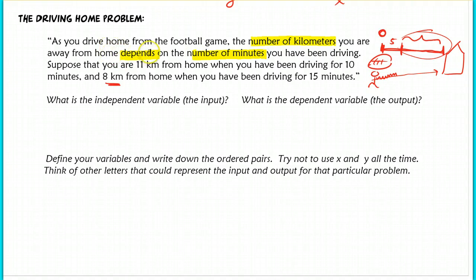But the output here, in this case, is going to be the number of kilometers because it says very explicitly here, the number of kilometers you're away from home depends on the number of minutes. So, you've got to look for phrases like that. So, number of kilometers is my dependent variable, the output, and the independent variable is the number of minutes. Make sure you're writing number of minutes, number of kilometers, not just minutes, not just kilometers, because it's really quantity. So, I'm going to take off points if I don't see number of in front of your units.